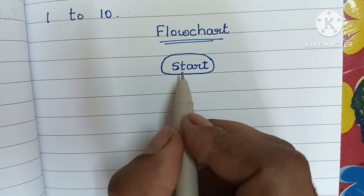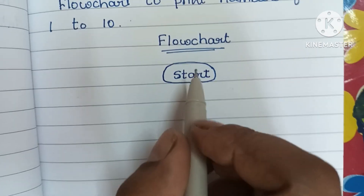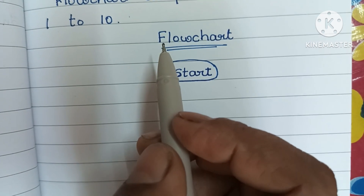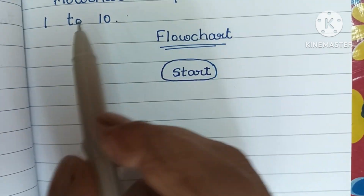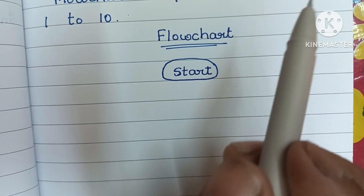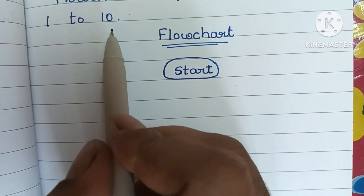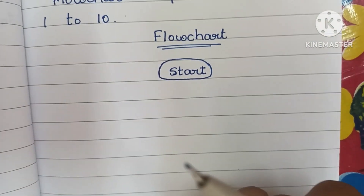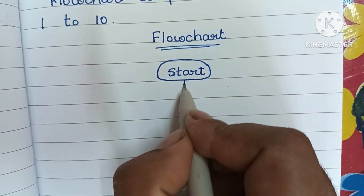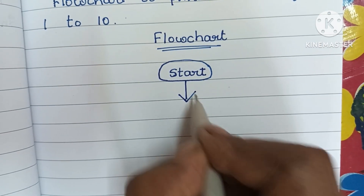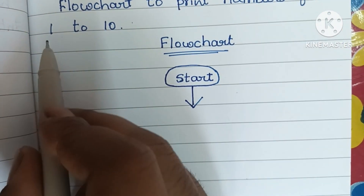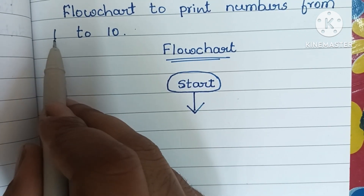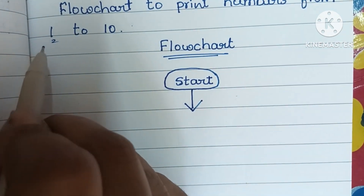Within that we have to write the start statement. Next, here there is no need to read input values because the values are already given. We have to print numbers from 1 to 10, so no need to read input values. Next, we have to declare the value of i. Initially, i is equal to 1.